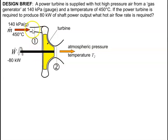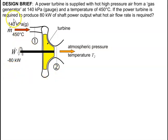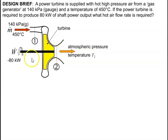Also, the height z between point one and point two is nearly the same, so z1 equals z2, measured from a datum line. We can also assume the velocity at point one equals the velocity at point two. The work done is negative — minus 80 kilowatts — because work is being done by the turbine system.